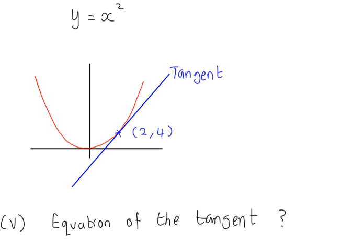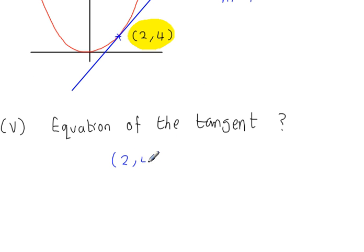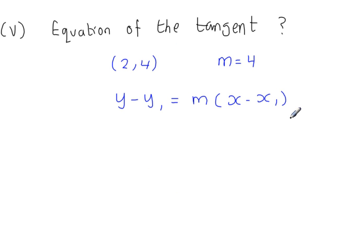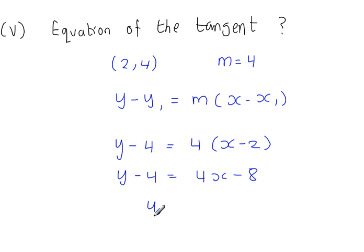So what's the equation of the tangent? The tangent is just a straight line. We know that the tangent goes through the coordinates (2, 4) and has a gradient equal to 4, represented by m equals 4. Using y minus y1 equals m(x minus x1) from coordinate geometry: y minus 4 equals 4(x minus 2), giving y minus 4 equals 4x minus 8, so y equals 4x minus 4. This is the equation of the tangent.